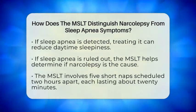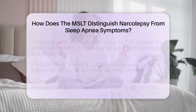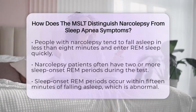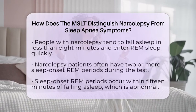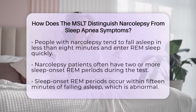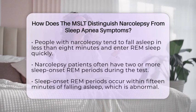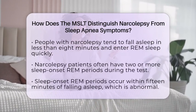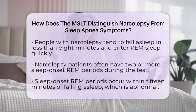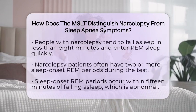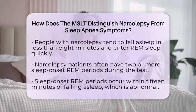People with narcolepsy tend to fall asleep in less than eight minutes on average and often enter REM sleep within a few minutes of falling asleep. They also usually have two or more sleep onset REM periods during the test, meaning REM sleep begins much sooner than normal, usually within 15 minutes of falling asleep.